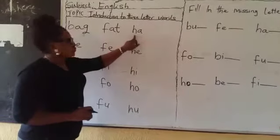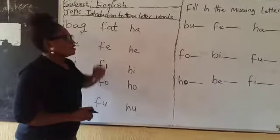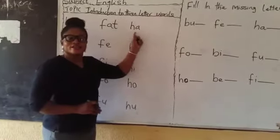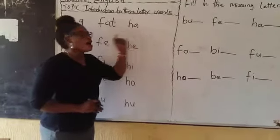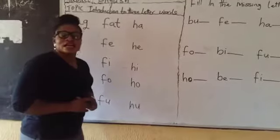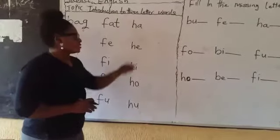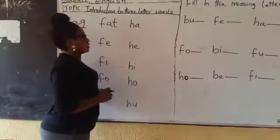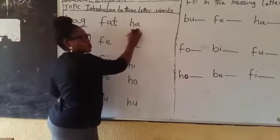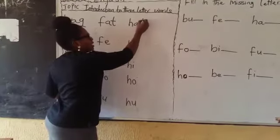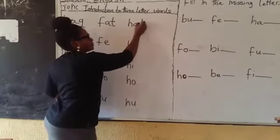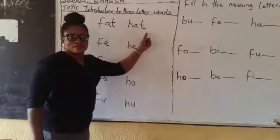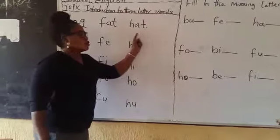Now let's go to ha. And this is what? Ha. Again. Ha. Now we are going to use a consonant to make it a three-letter word. Now which letter are we going to use? Let's use t-t. Now blend it: hat. Again. Ha. Good.